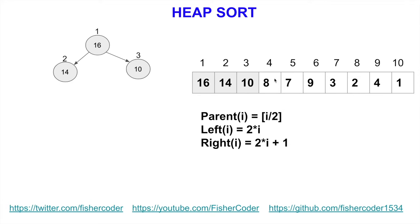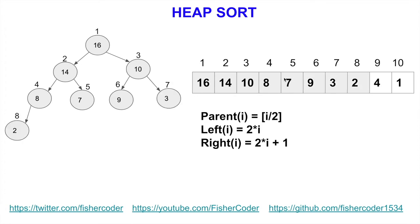With that said, we'll continue to map the remainder of this array into a valid heap structure: 8, 7, 9, 3, 2, 4, and 1. We keep mapping things from left to right. That's how we can map any randomly ordered array into a valid heap data structure.